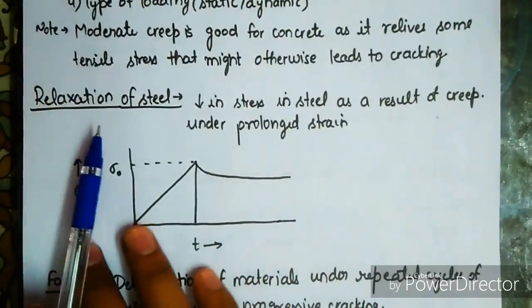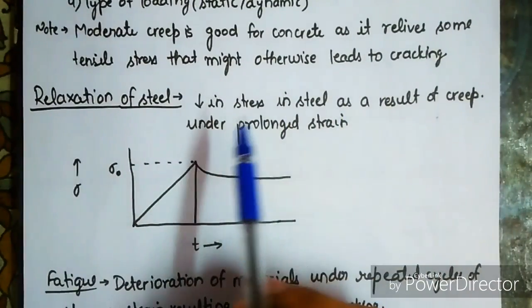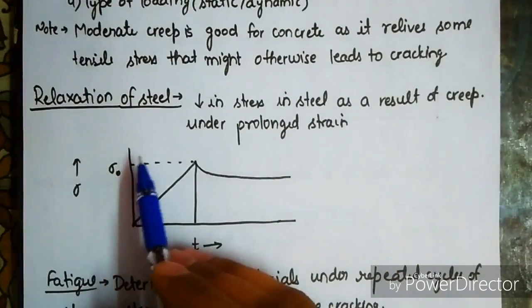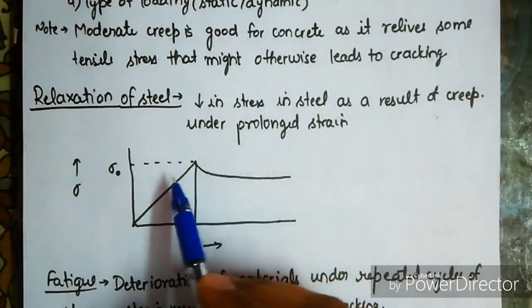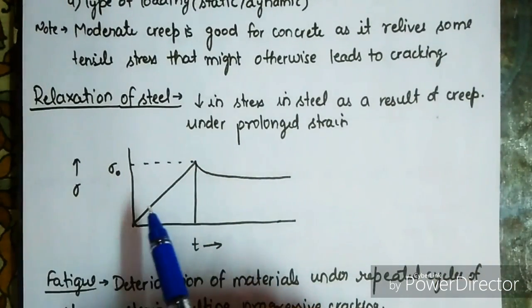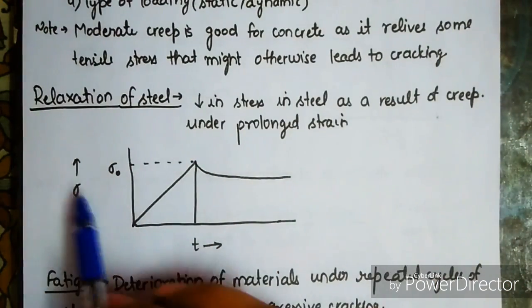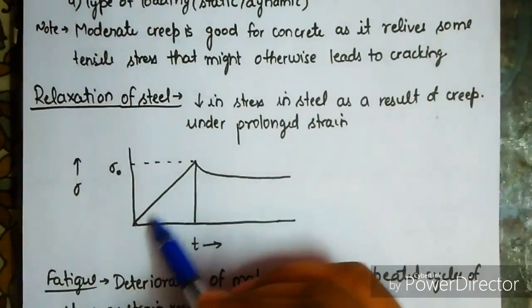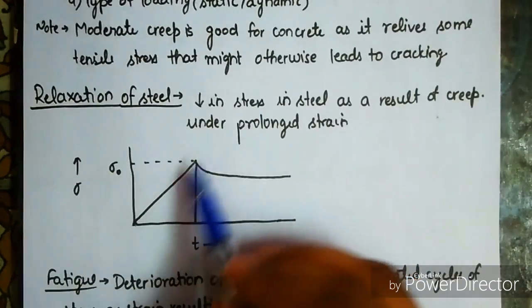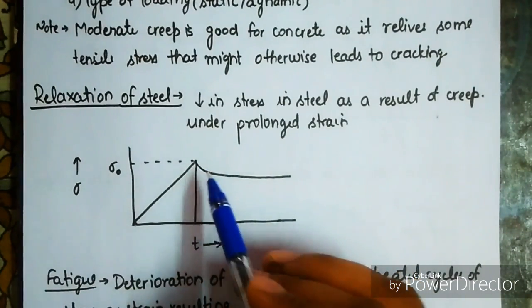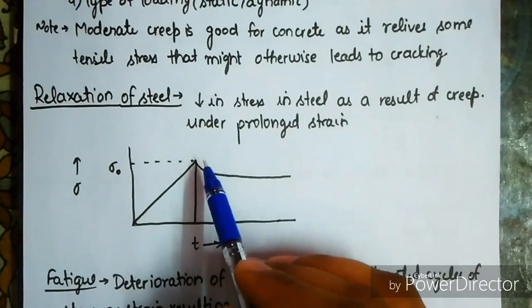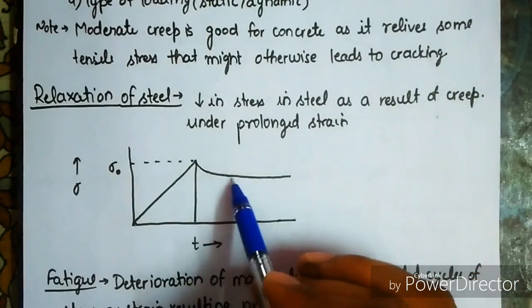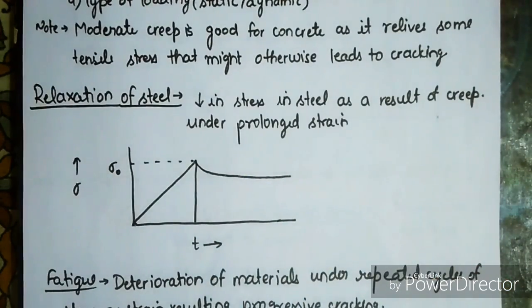Relaxation of steel is the decrease in stress in steel as a result of creep under prolonged strain. On the stress-versus-time graph, after the stress is applied, stress increases but then starts decreasing with time, and a small value of decrement can be observed.